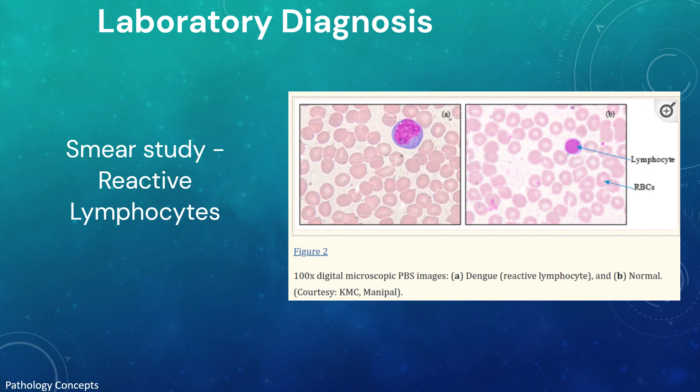In smear study during acute dengue infection, leukopenia with reactive lymphocytes, monocytopenia, and thrombocytopenia are seen. Reactive lymphocytes show a larger, irregular nucleus with increased, bluer cytoplasm. In the recovery phase, lymphocytes normalize first, followed by platelet count.